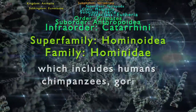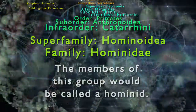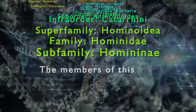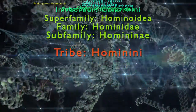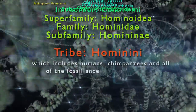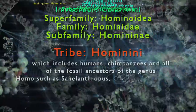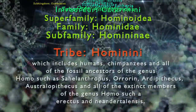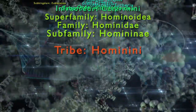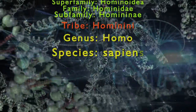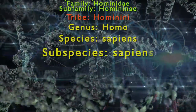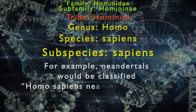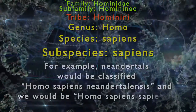Our superfamily is Hominoidea, which includes humans, chimpanzees, gorillas, orangutans, and gibbons. Our family is Hominidae, which includes humans, chimpanzees, gorillas, and orangutans — members called hominids. Our subfamily includes humans, chimpanzees, and gorillas. Our tribe Hominini includes humans, chimpanzees, and all fossil ancestors of the genus Homo such as Sahelanthropus, Ardipithecus, Australopithecus, and extinct Homo species like erectus and neanderthalensis. This brings us to genus Homo, species sapiens, and subspecies sapiens — distinguishing us from archaic forms. Neanderthals would be Homo sapiens neanderthalensis; we are Homo sapiens sapiens.